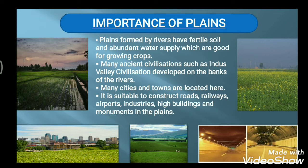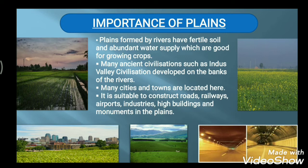Plains formed by rivers have fertile soil and abundant water supply, which are good for growing crops. Many ancient civilizations, such as the Indus Valley Civilization, developed on the banks of these rivers, as these areas were good for cultivation and served different purposes. Many cities and towns are also located in plain areas.